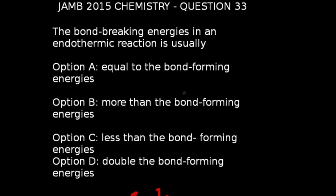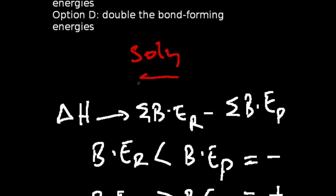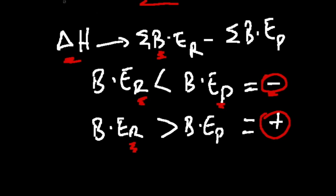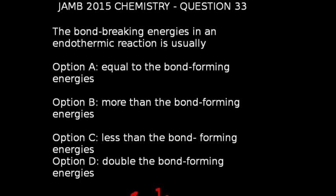Question 33 of JAM 2015 chemistry: The bond-breaking energies in an endothermic reaction are usually — in an endothermic reaction, ΔH is positive, meaning heat is absorbed. The heat of reaction, ΔH, equals the summation of bond-breaking energies of the reactants minus those of the products. When the bond-breaking energies of the reactants are greater than those of the products, the reaction is endothermic. The correct answer is option B.